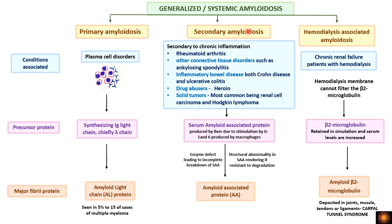Secondary amyloidosis is seen in chronic inflammatory conditions such as rheumatoid arthritis, other connective tissue disorders like ankylosing spondylitis, inflammatory bowel disease (Crohn's disease and ulcerative colitis), heroin drug abuse, and solid tumors — specifically renal cell carcinoma and Hodgkin's lymphoma. Chronic inflammatory cells produce cytokines that stimulate hepatocytes to produce serum amyloid associated protein. Incomplete breakdown of this precursor — due to enzyme defect or structural abnormality making it resistant to degradation — results in amyloid associated protein.